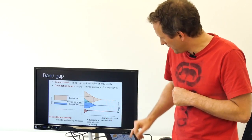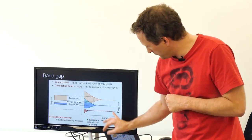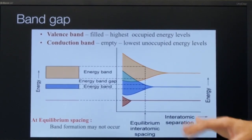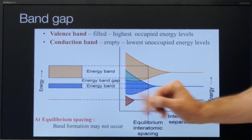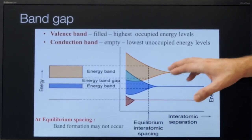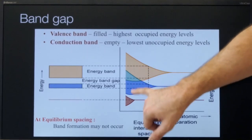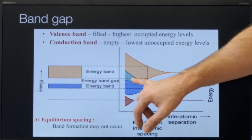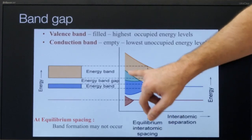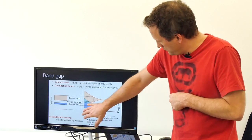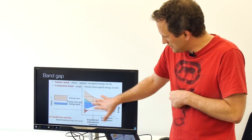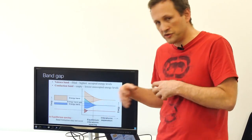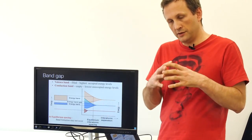Back to the graph: on the right we have interatomic separation, so far apart we might have atoms on their own. As we get closer and closer, you can see the bands form. And then down here, we might have conductors, with the conduction band and valence band overlapping. So intuitively, this would suggest that if we wanted to separate the conduction and valence bands, we might want to try to pull the atoms apart somehow, and there are a number of ways that can happen.